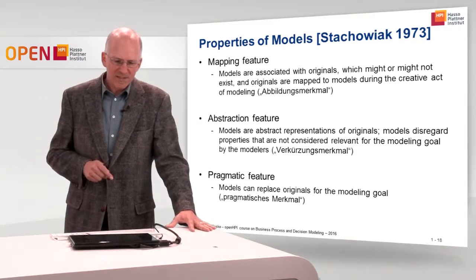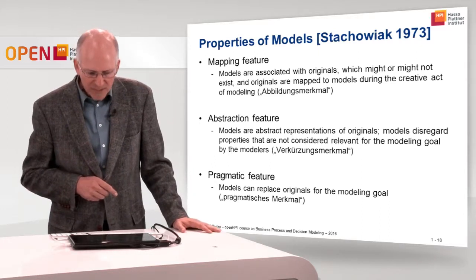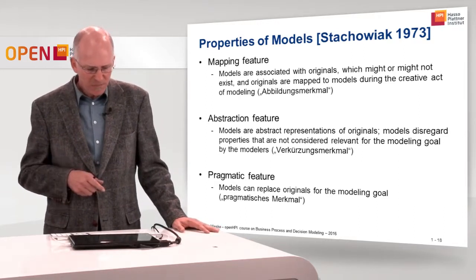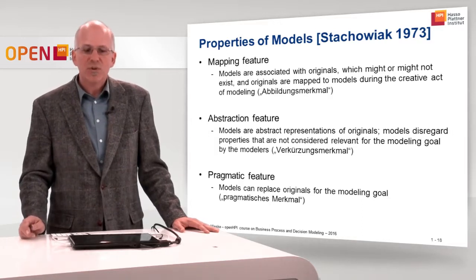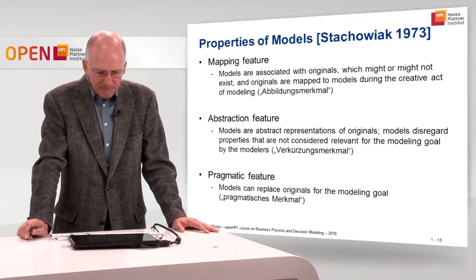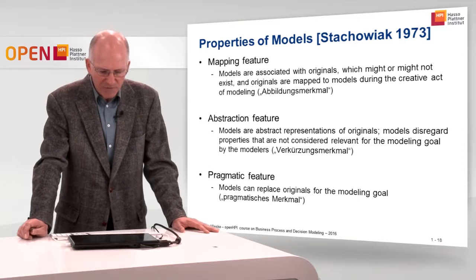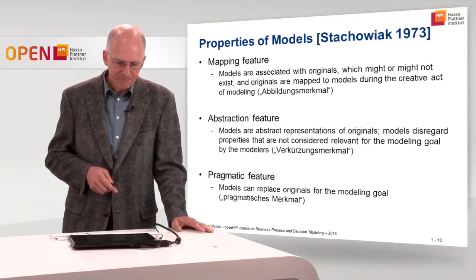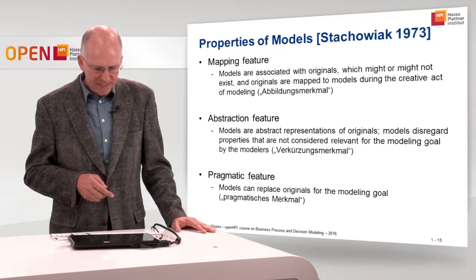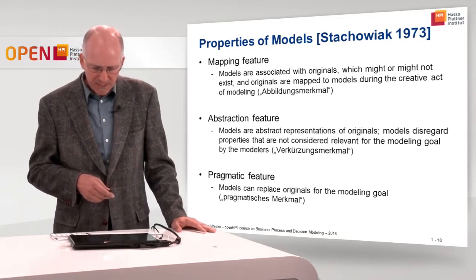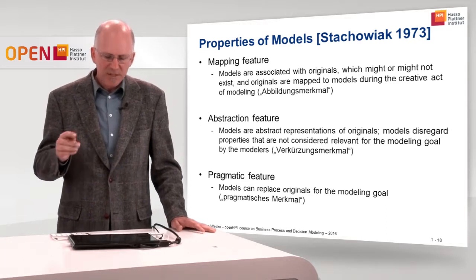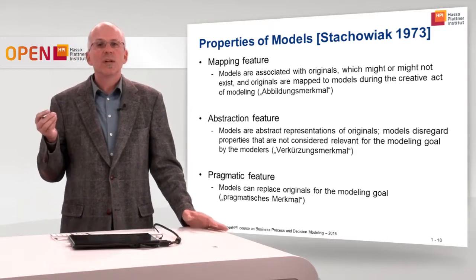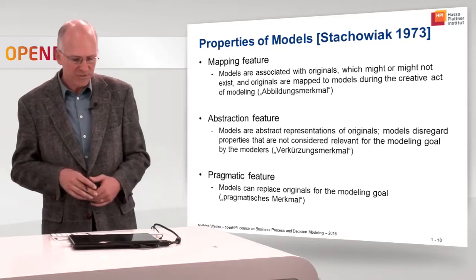One slide on modeling theory: the properties of models defined by Stachowiak in 1973. He says that all models have a mapping feature — models are associated with originals, which might or might not exist, and originals are mapped to models during the creative act of modeling. In German this is called Abbildungsmerkmal. The abstraction feature says that models are abstract representations of originals, meaning models disregard properties not considered relevant for the modeling goal, which helps in coping with complexity.